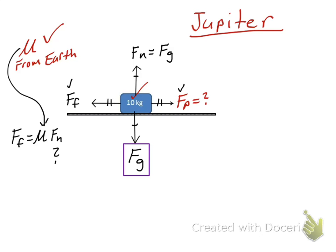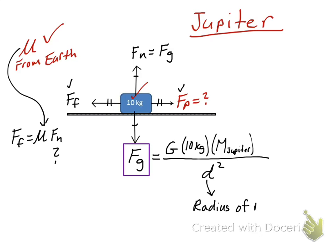But this force of gravity on this 10 kilogram mass on Jupiter, there's where the difference comes in. On the face of Jupiter, things do not accelerate at 9.81. So we cannot use our shortcut. We have to use Newton's law of universal gravitation to find the force of gravity.